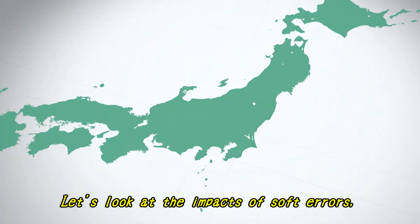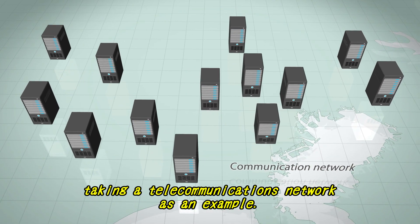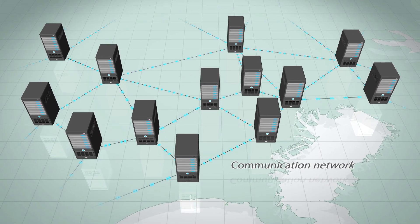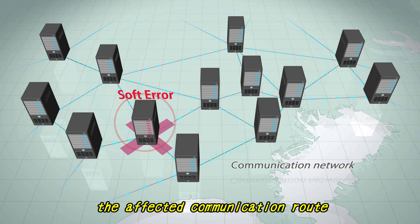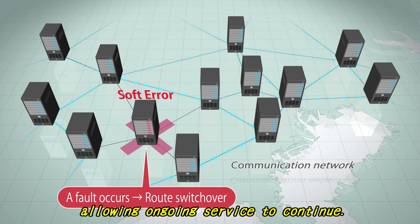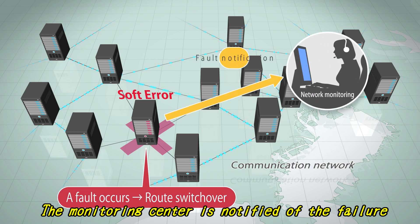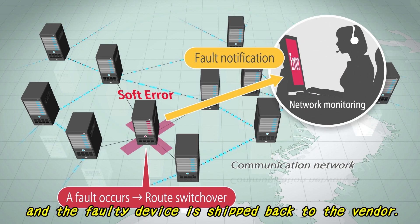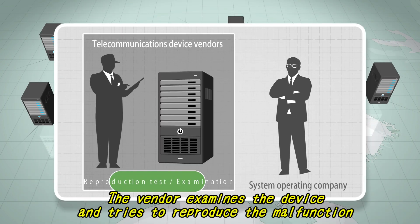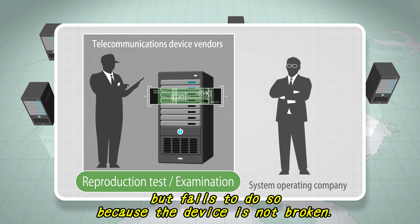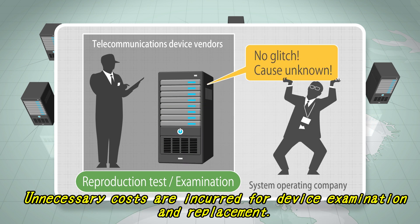Let's look at the impacts of soft errors, taking a telecommunications network as an example. When a failure occurs due to a soft error, the affected communication route is switched over automatically, allowing ongoing service to continue. The monitoring center is notified of the failure, and the faulty device is shipped back to the vendor. The vendor examines the device and tries to reproduce the malfunction, but fails to do so because the device is not broken. Unnecessary costs are incurred for device examination and replacement.